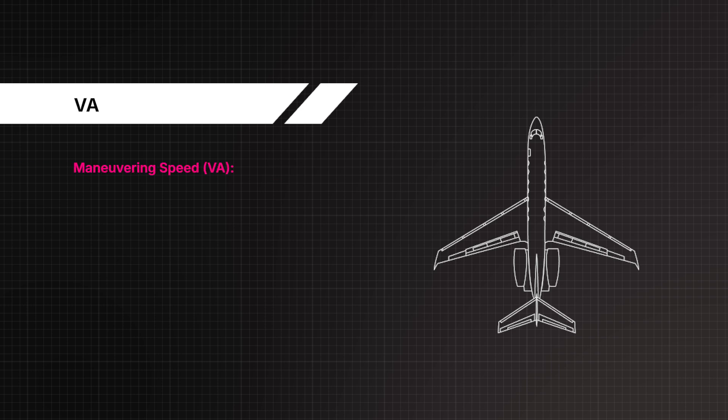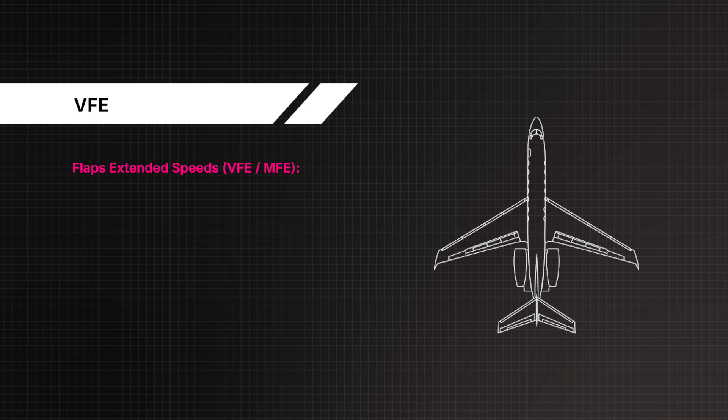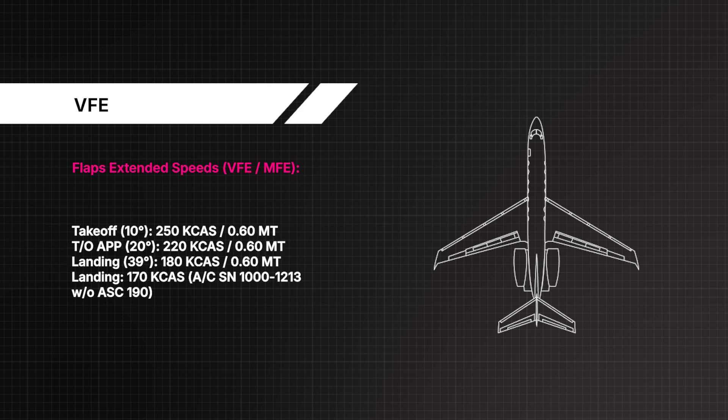Maneuvering speed VA: 206 knots. Flaps extended speeds VFE/MFE — take-off 10 degrees: 250 knots or 0.60 MAC; take-off and approach 20 degrees: 220 knots or 0.60 MAC; landing 39 degrees: 180 knots or 0.60 MAC.